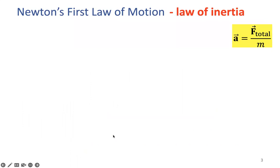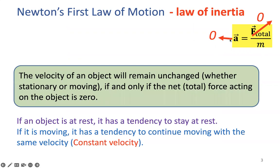Going back to Newton's first law: whenever the net force equals zero — that's Newton's first law, when there's a zero net force — the left-hand side gives acceleration zero according to this formula. We already learned about these two scenarios. Acceleration is zero for a stationary object or an object moving with constant velocity, if the net force acting on the object is zero.